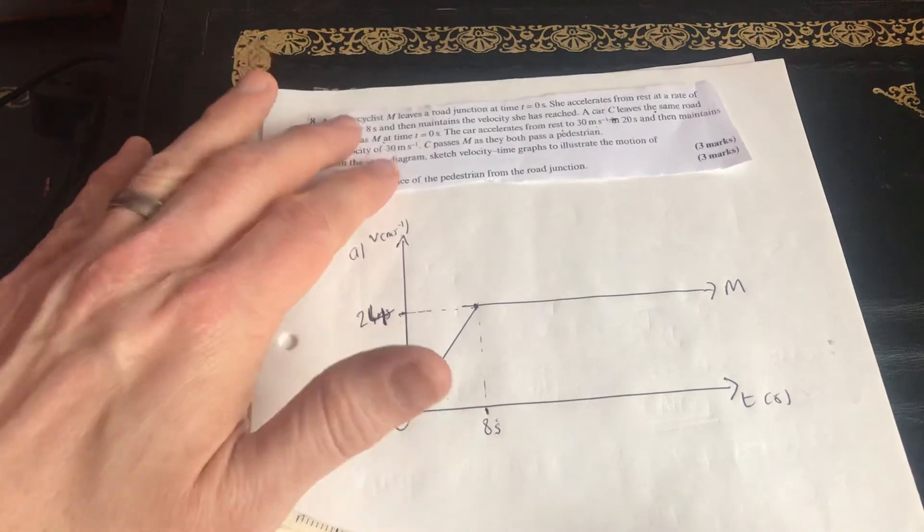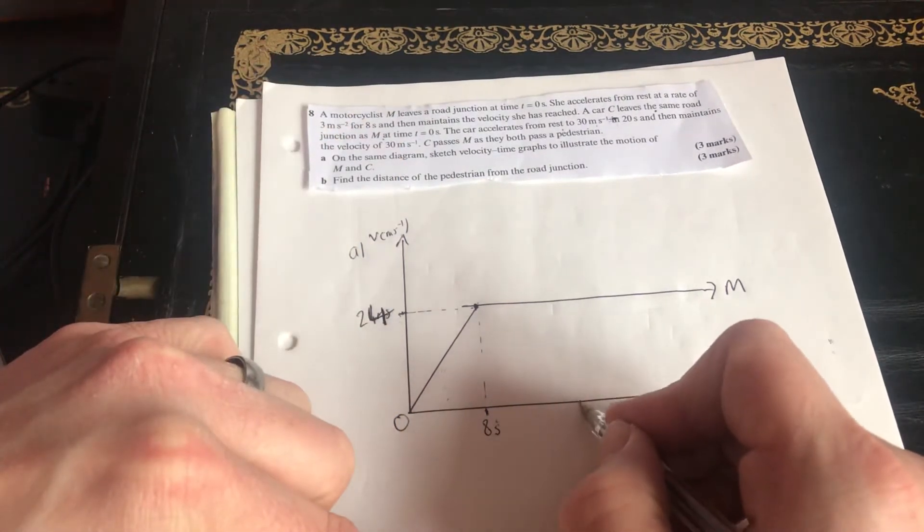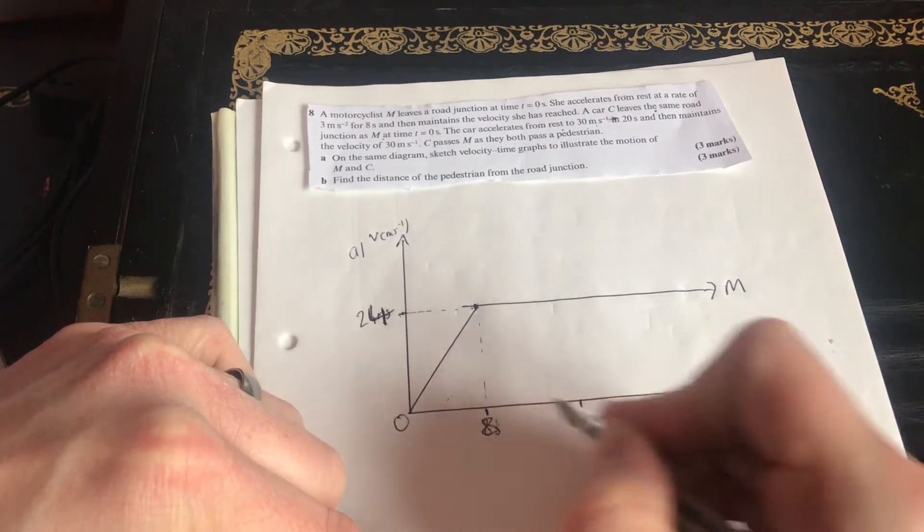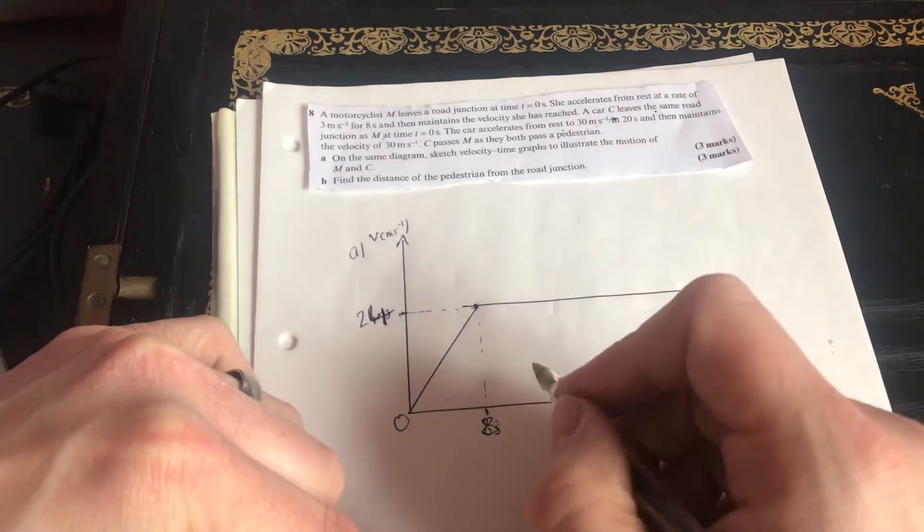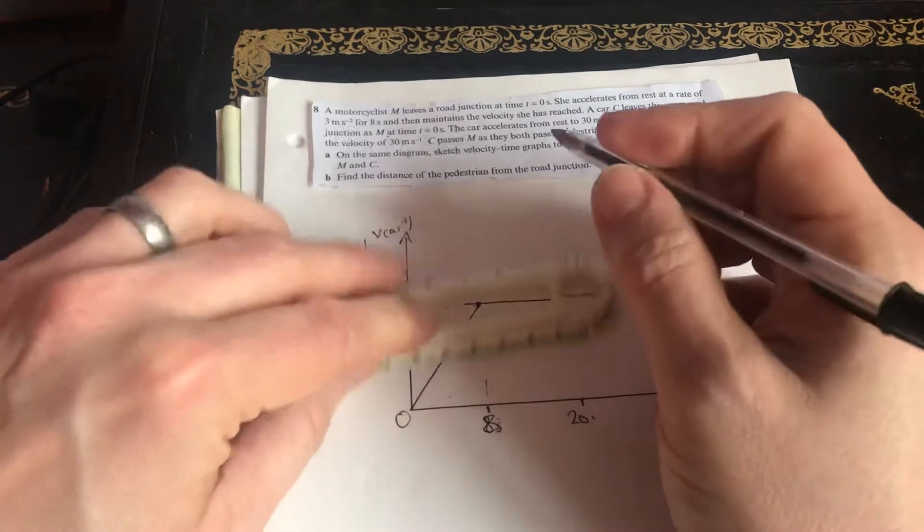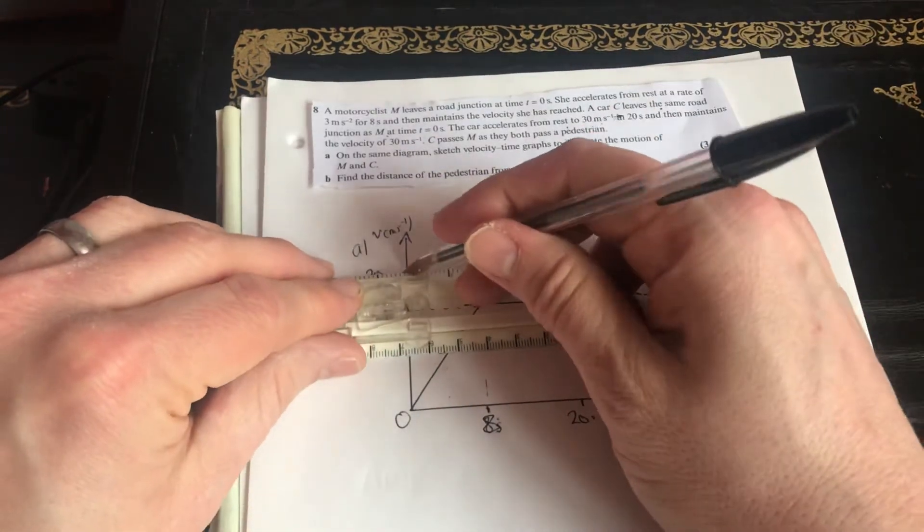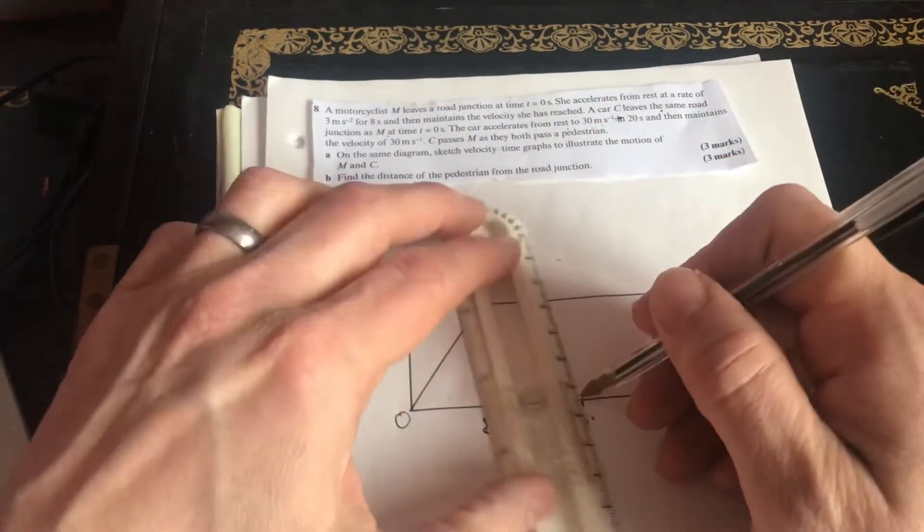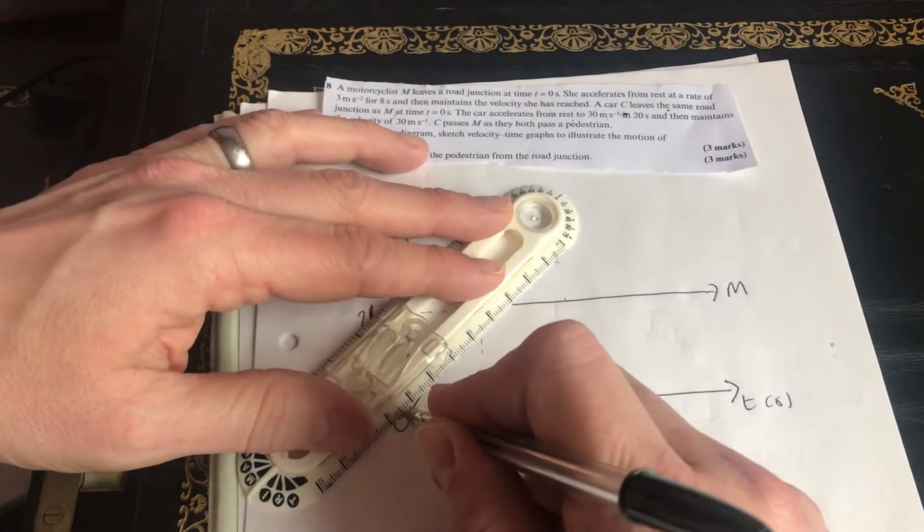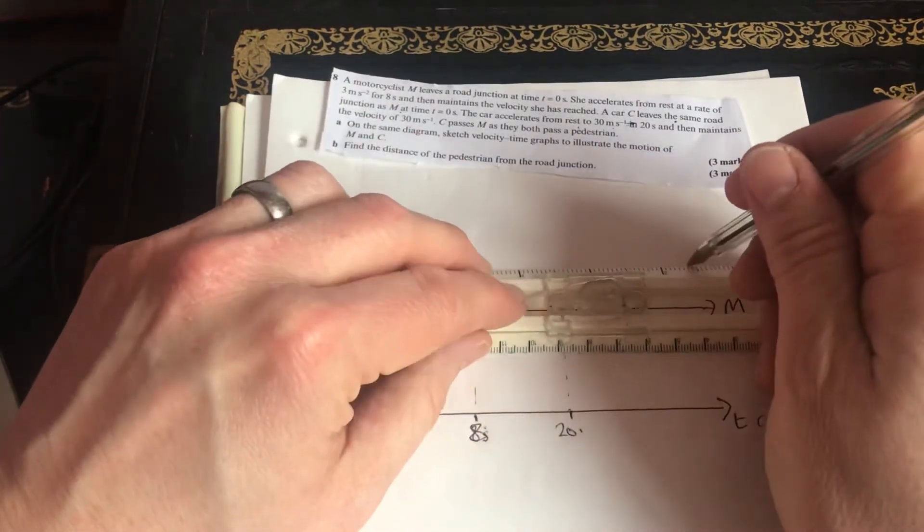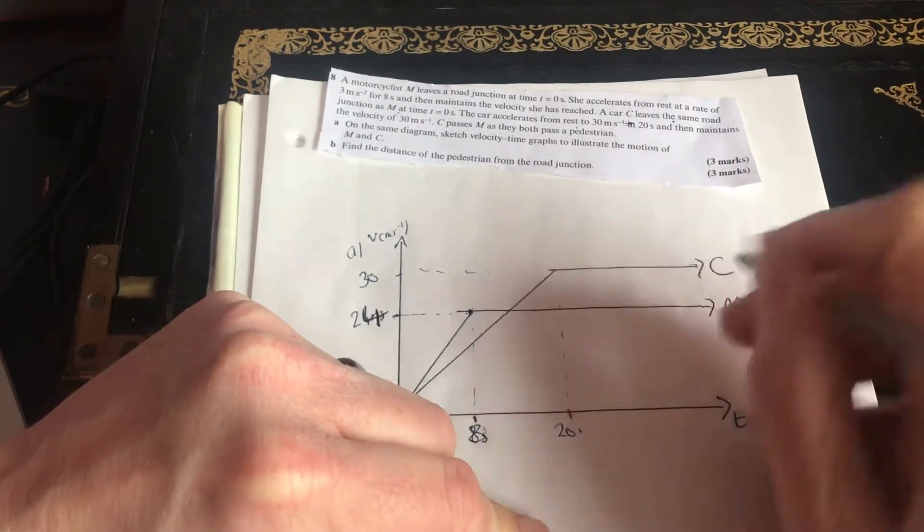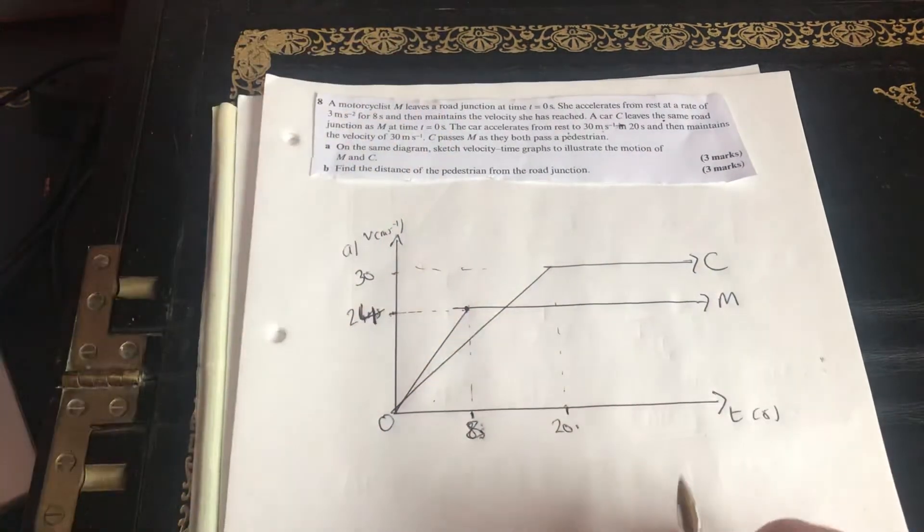The car, however, accelerates for a little bit longer. It accelerates for 20. So there's 20. And it gets up to 30 meters per second. So let's do 30. I'll put a dotted line up there just to show where we're going. So there's the car. The car is going up there. And then the car maintains 30 meters per second. There you go. And that's good for A.